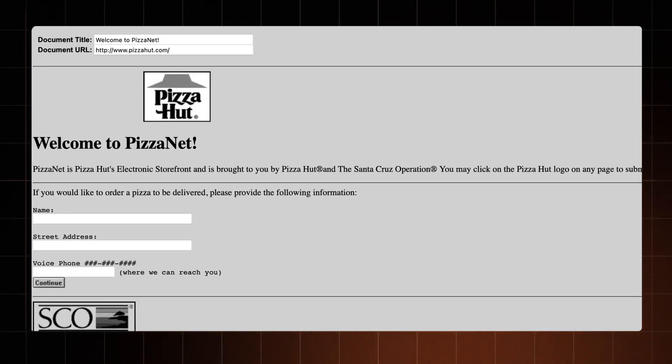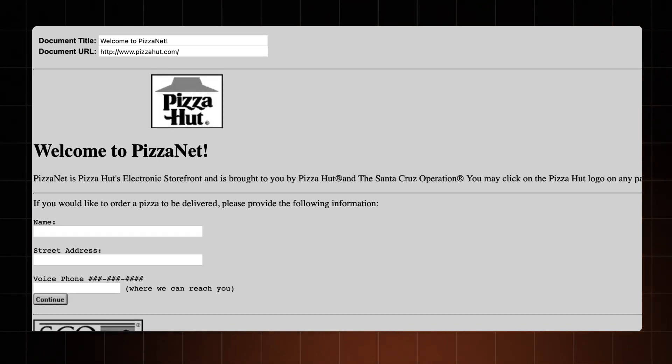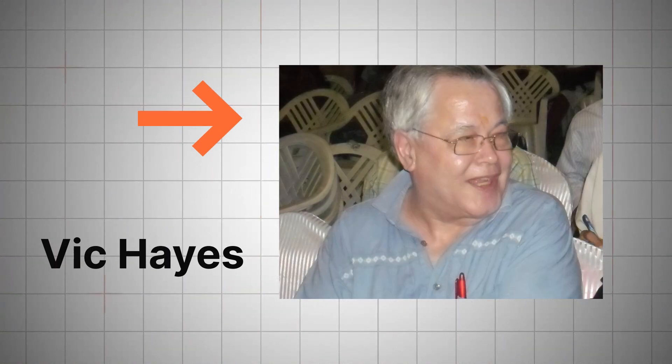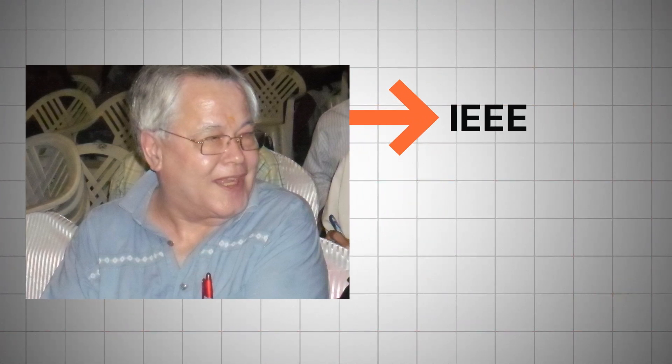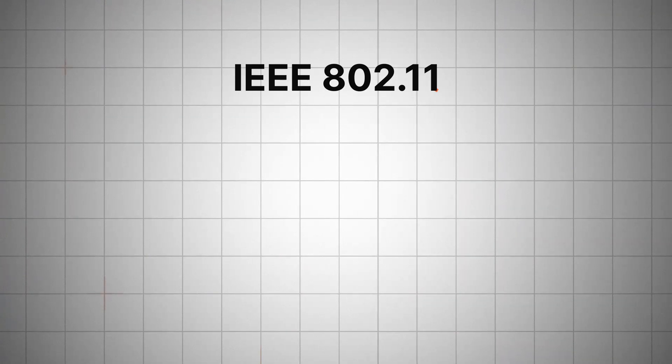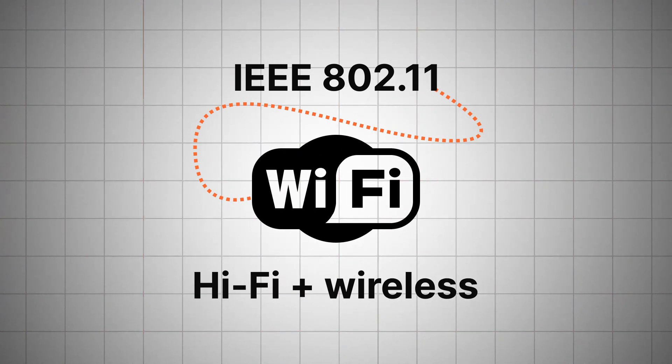Three years after the first internet-ordered pizza was delivered to some lucky person's home, this guy got tired of all the wires and introduced IEEE 802.11. But so you wouldn't have to say 'hey, my IEEE 802.11 is down,' the marketing team named it Wi-Fi. So that's when Wi-Fi was invented.